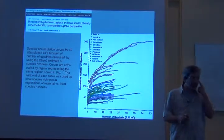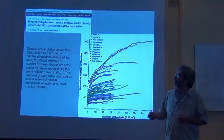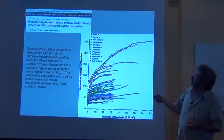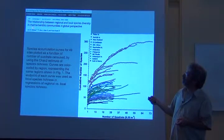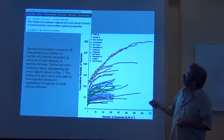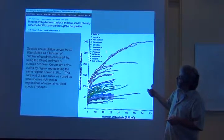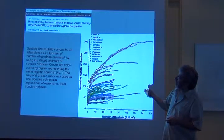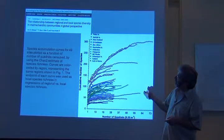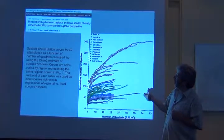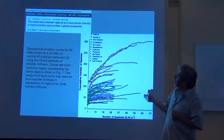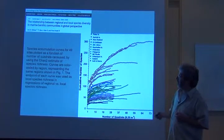Here's a paper, the relationship between regional and local species diversity in marine benthic communities, a global perspective. They have samples from Palau, Norfolk, New Zealand, Eastern Caribbean, Southwest Africa, the Seychelles, Antarctica, Patagonia, Northeast Pacific, Galapagos, Iceland, and Gulf of Maine.